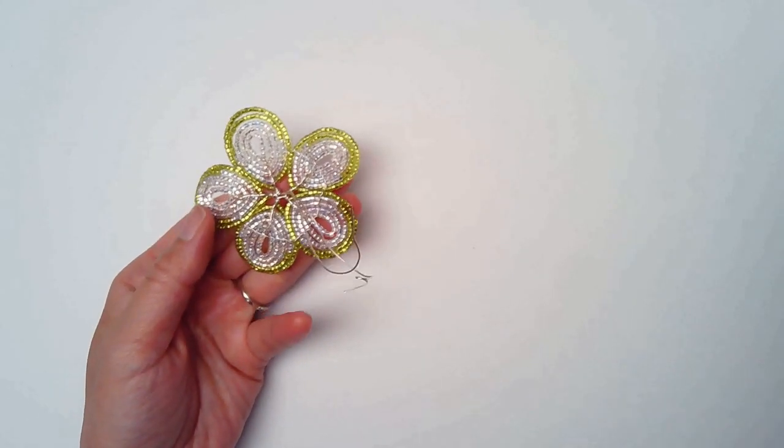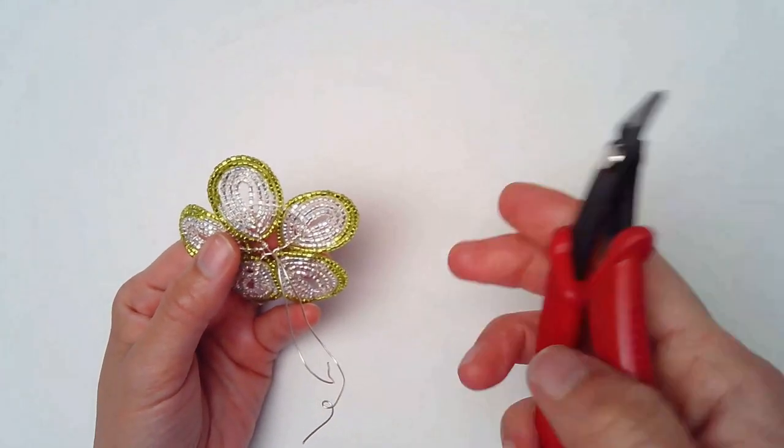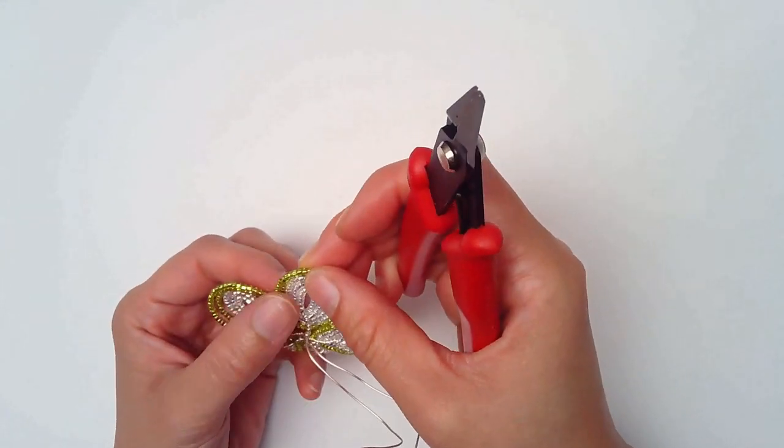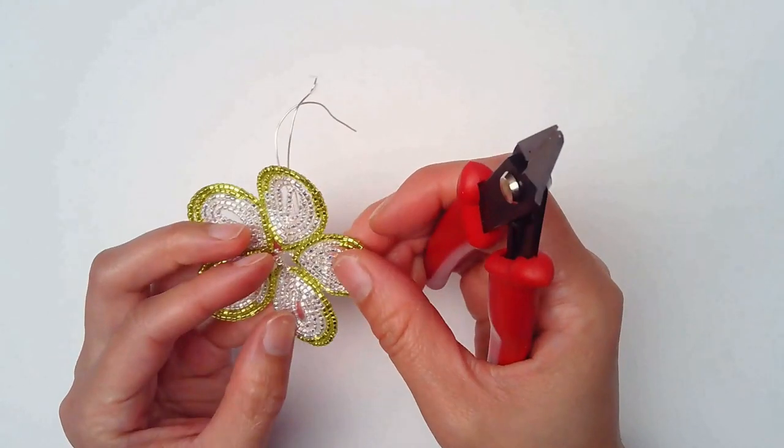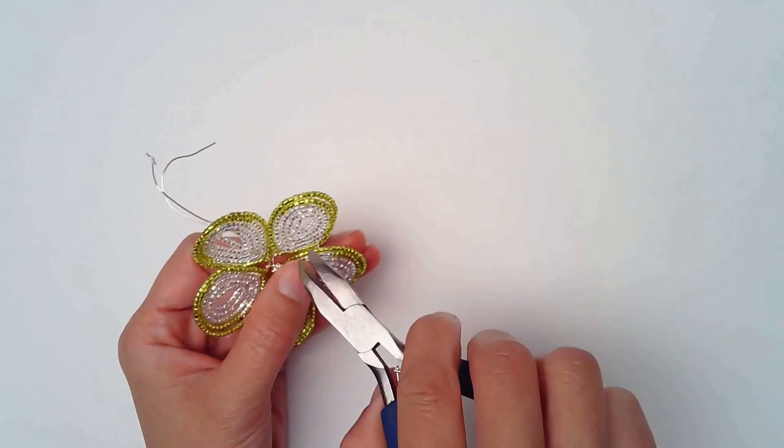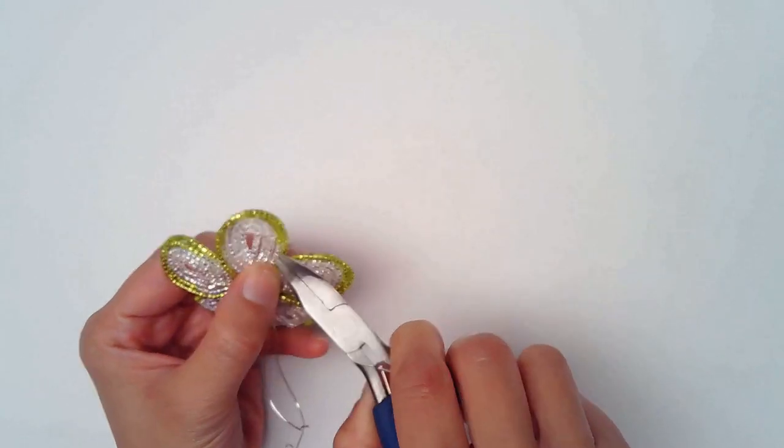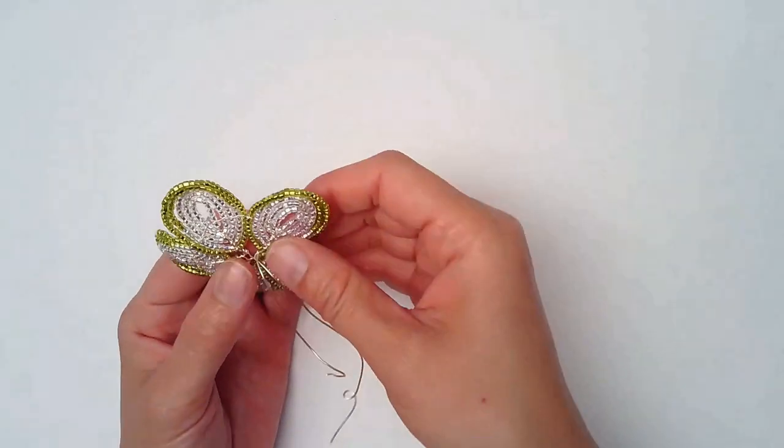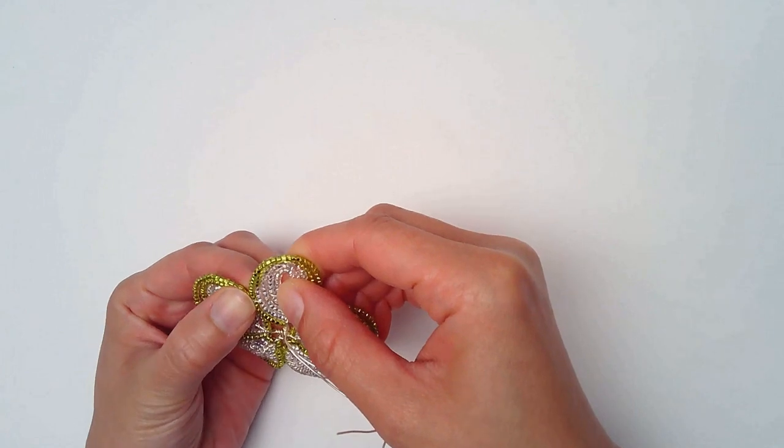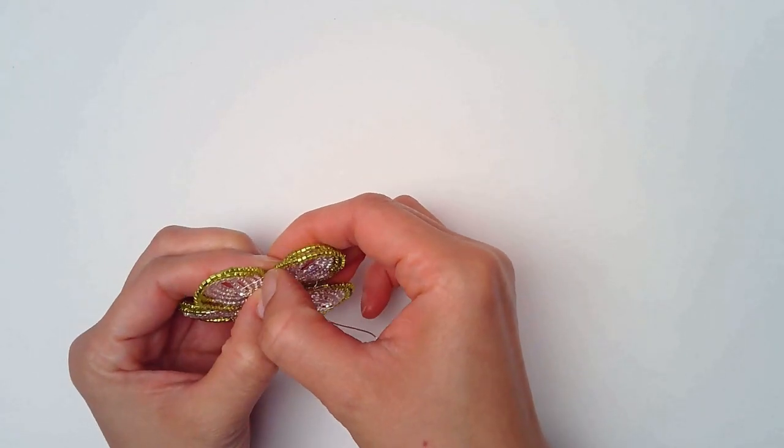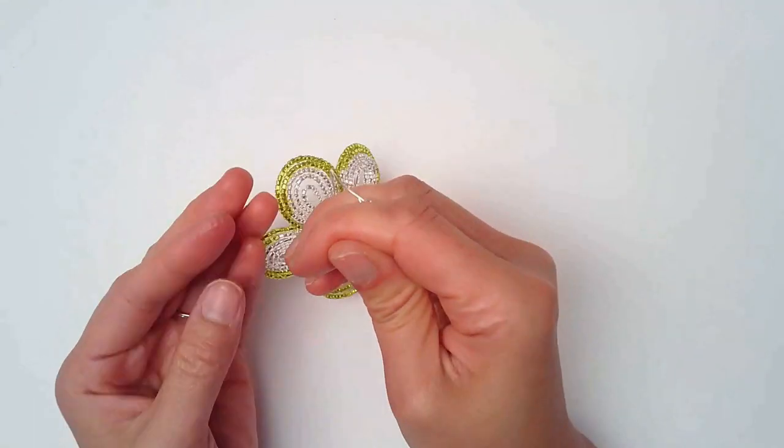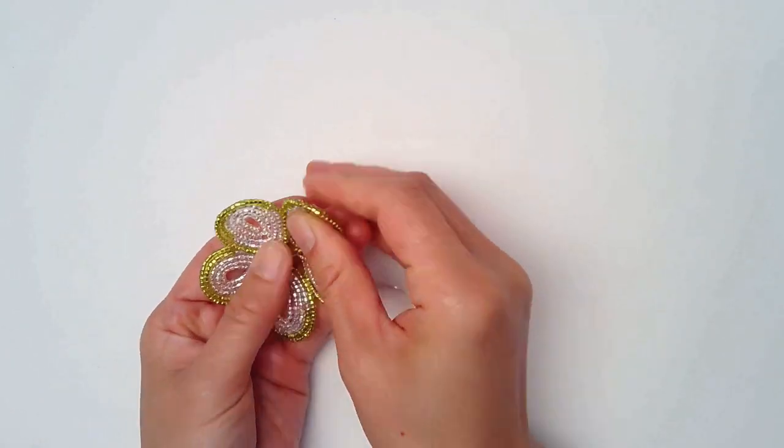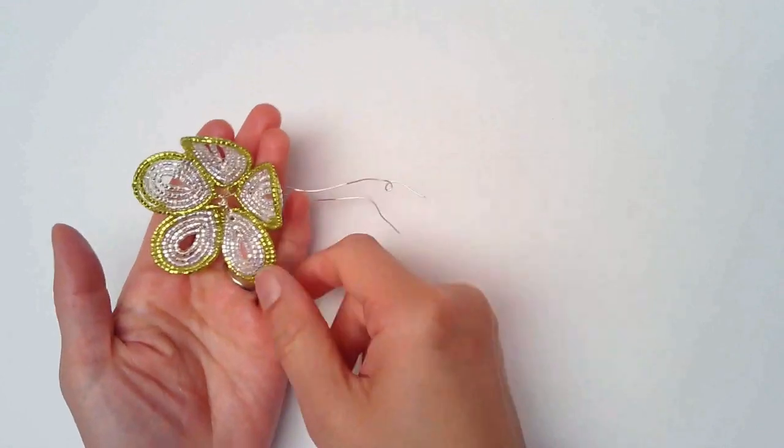Now that all the petals are connected, cut the ending wires. Tuck it in. Cut it off. Tuck it in with your fingers or your tool. Now you can see that your petals are a lot neater. They won't get out of place.